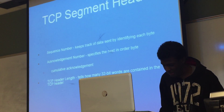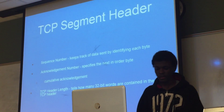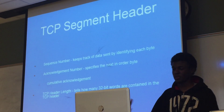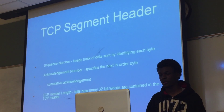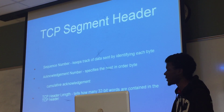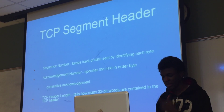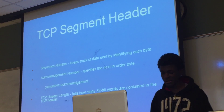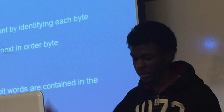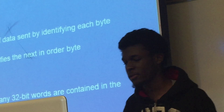The TCP header length consists of how many 32-bit words are contained in the header. The 32-bit words are what comprise the options field in the header. Essentially what this is used for is to say how big the options field is, how big the header is based off that, and where the data starts after the options field.